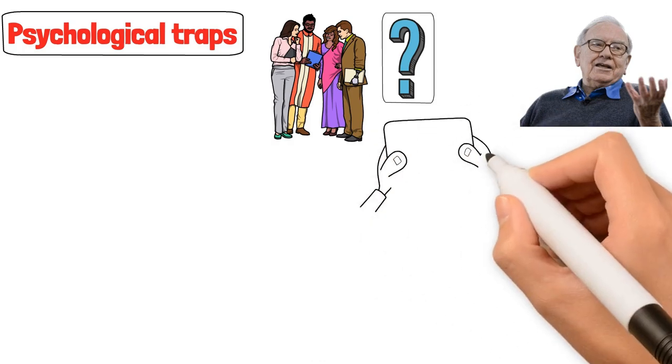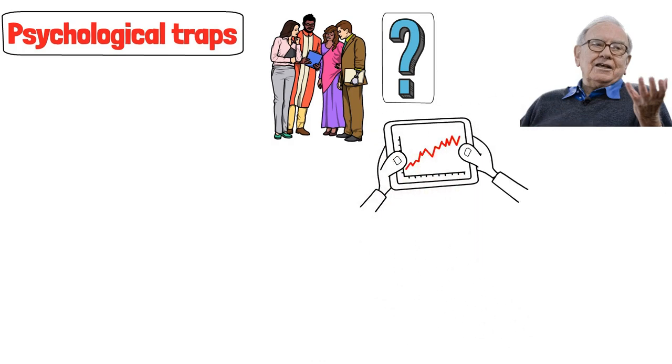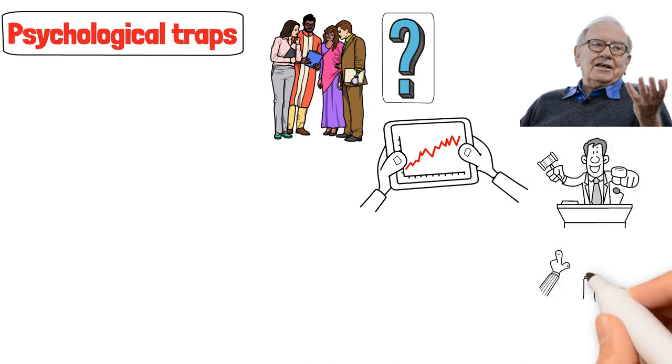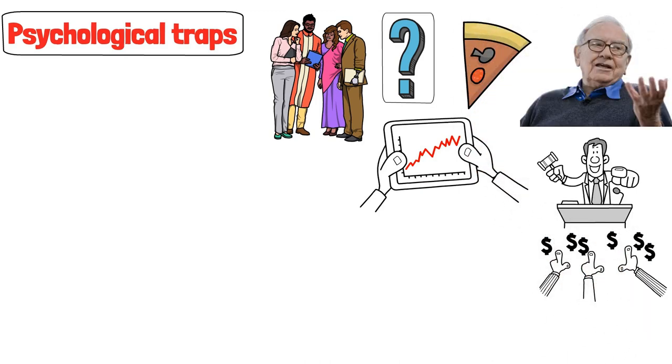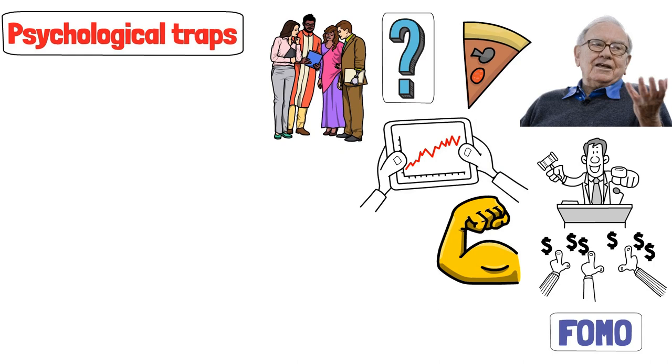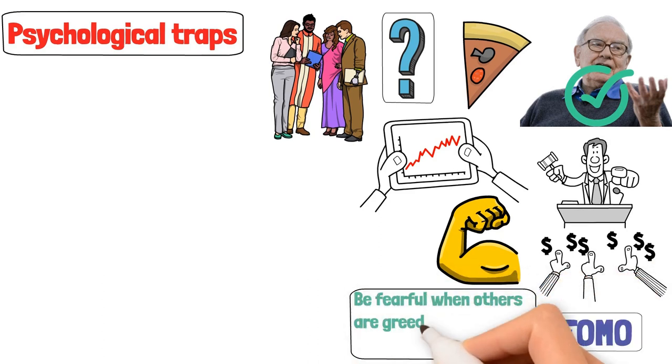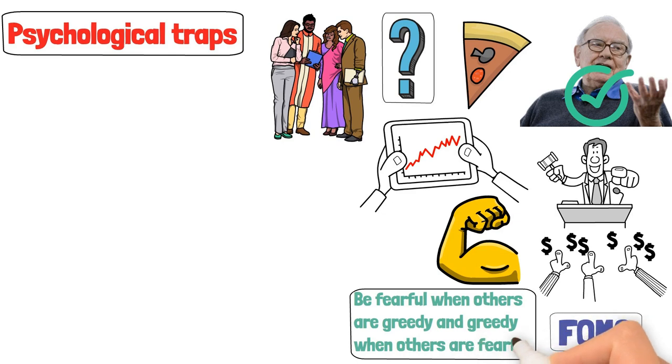Imagine that the market is booming. Stocks are soaring. Everyone around you is buying up shares like they're the last slices of pizza at a party. You feel the FOMO creeping in. That's fear of missing out, folks, and it's a powerful force. But here's where Buffett's wisdom shines like a lighthouse in a stormy sea of greed. He says, be fearful when others are greedy and greedy when others are fearful. Simple, yet profound.